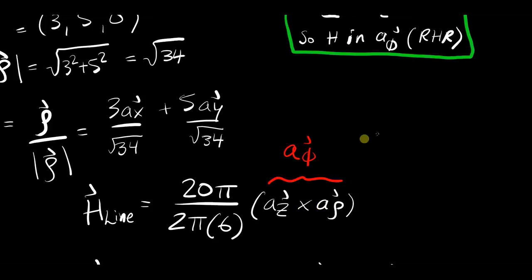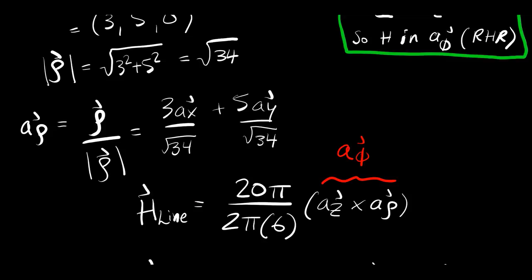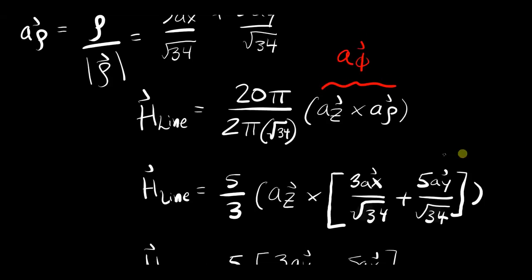That's what we've done here. This used to be a phi. But we know that az cross a rho is a phi thanks to that little trick. We plugged in 20 pi here. This is given to us. And this should be 2 pi. Oh, this is pretty serious mistake, actually. This should not be 6. This should be magnitude of rho. And the magnitude of rho is root 34. So we plugged in this for the magnitude of rho, which we solved for earlier. And we transformed a phi into az cross a rho. And we know what a rho is. We found that, too. So we can slap that in there as well. This 5 over 3 is what you get after you simplify this stuff.